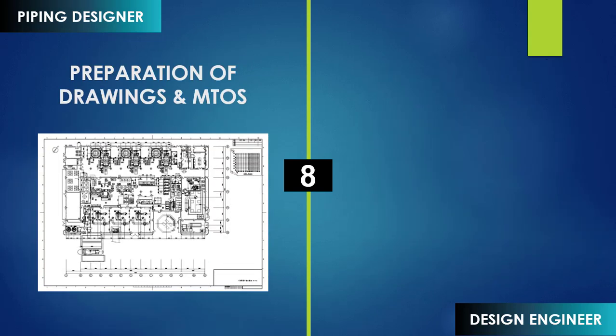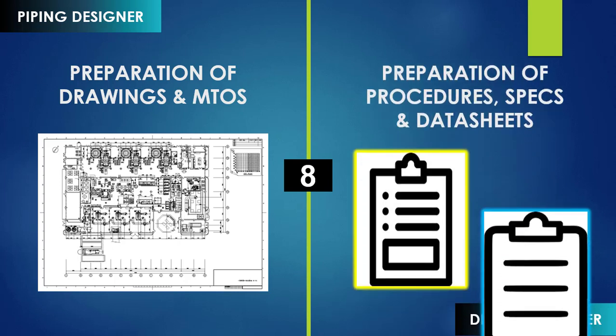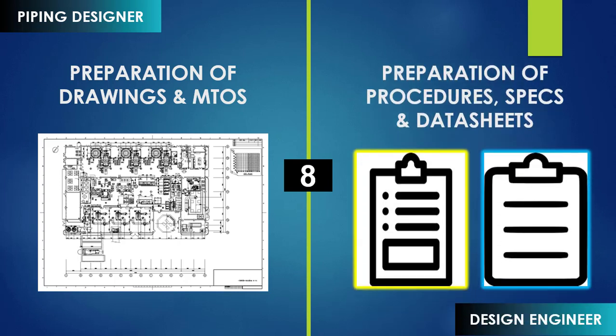It is the responsibility of the designer to prepare the major deliverables such as drawings and MTOs. Design engineers, on the other hand, prepare procedures, specifications such as material specifications and procurement specifications, and data sheets. Since drawings and MTOs are already prepared by designers, design engineers focus on the documentation part.